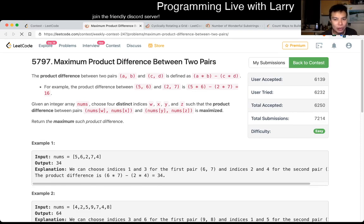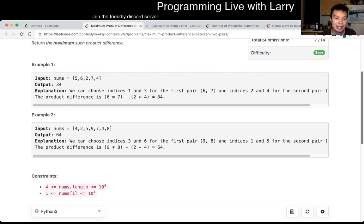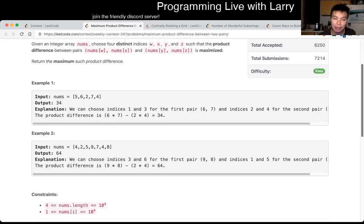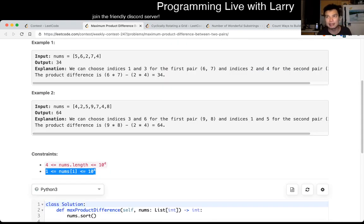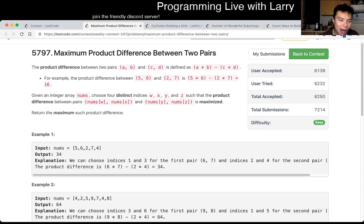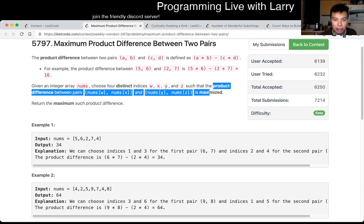So this one is about greedy. The first thing you should look at when thinking about greedy is the range of the numbers, because if there are negative numbers, you might have to consider more edge cases. But the idea is still true. The product difference between two pairs makes sense when you ask yourself: